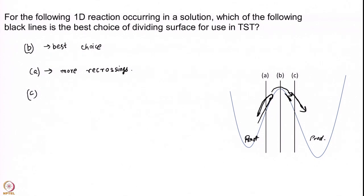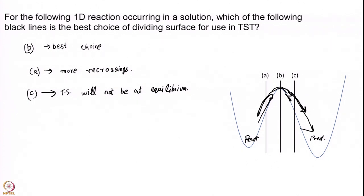What about C? At C, the energy surface has trajectories simply falling down. Is C better then? No — here the other assumption comes into picture: the equilibrium assumption will be bad. We also assume the transition state is at equilibrium with the reactants. At C, trajectories are coming up and crashing forward into the products, so there is no reason to expect a good Boltzmann distribution. B is the optimal point where you get minimum recrossings and the equilibrium assumption holds better.